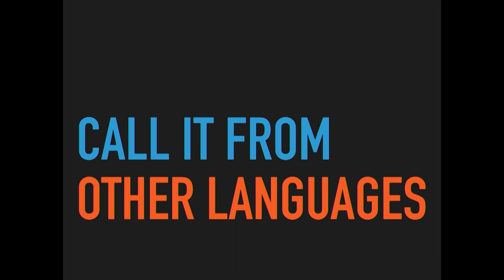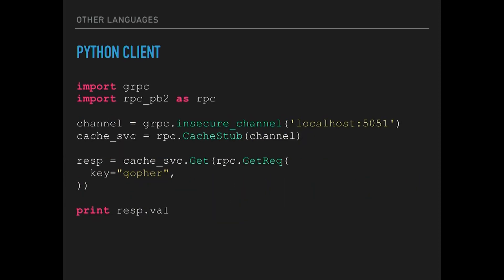The craziest part is you can transparently call the service from other languages. Here's a Python client — the code generated by the protoc compiler is just a Python package you import, and it should look relatively similar to what we were doing in Go. One complaint though: for as great as the cross-language support is compared to things like Thrift that never quite got there, in Go it was called a cache client but in Python it's called a cache stub, and there's no reason for that difference. It's just that different people implemented them.